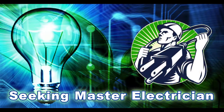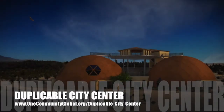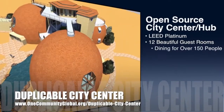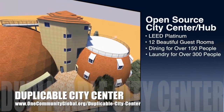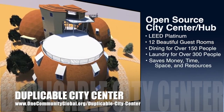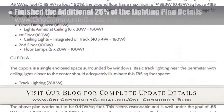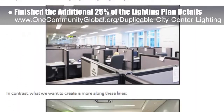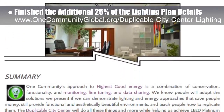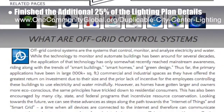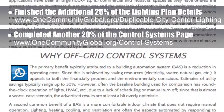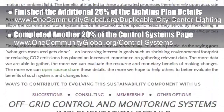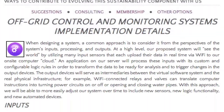Our newest consultant Scott Thomas and his Shadow Ridge Signature Architecture Program team began working on the EarthBank Village shower and toilet domes. Here are the initial bathroom concept images and the initial communal shower design. One Community is also creating an open source duplicable city center designed to be LEED Platinum certified, provide 12 guest rooms, dining for over 150 people, and laundry and recreation space for over 300 people, all while saving money, time, space, and resources. This week the core team finished an additional 25% of the lighting plan overview details for the Duplicable City Center lighting plan page, and completed another 20% of the control systems page, bringing it to 30% completion total.